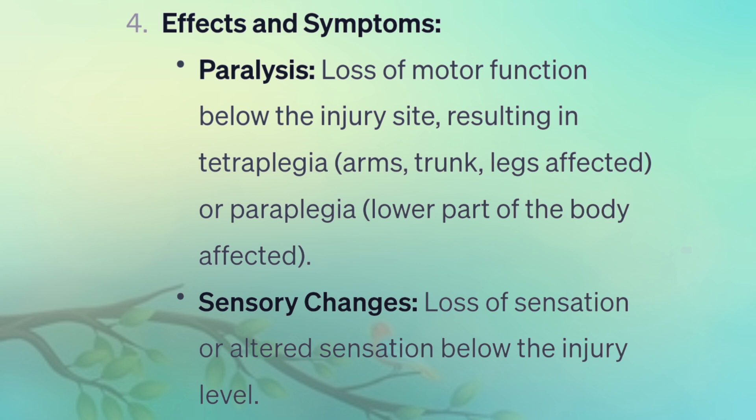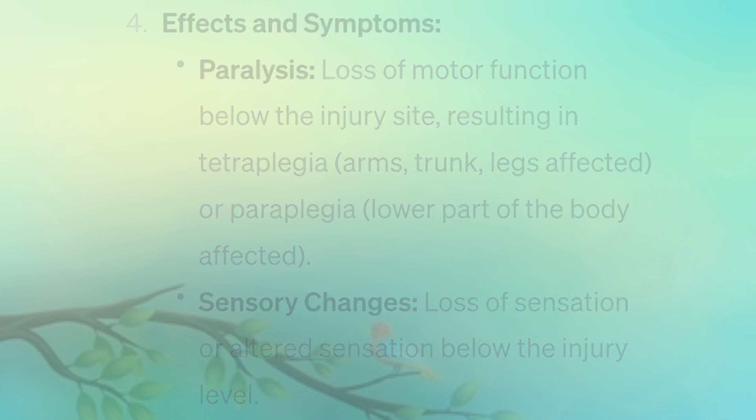Effects and symptoms. Paralysis involves loss of motor function below the injury site, resulting in tetraplegia — affecting arms, trunk, and legs — or paraplegia, affecting the lower part of the body. Sensory changes include loss of sensation or altered sensation below the injury level.